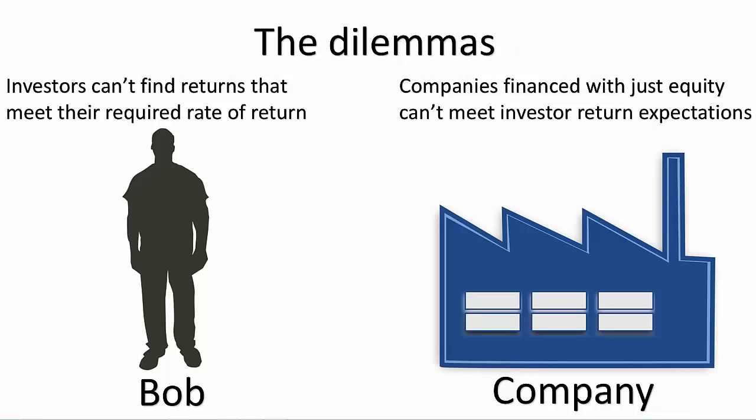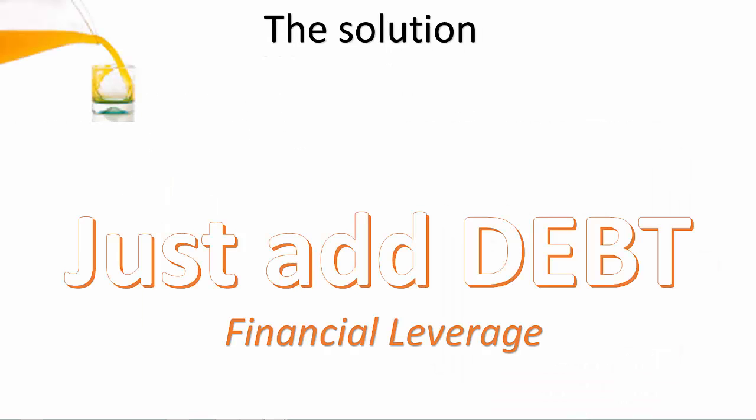The dilemma often confronting investors and companies alike is that the rates of return aren't high enough to meet expectations. The solution to this dilemma is to add debt. Isn't debt bad? Debt isn't bad in the finance world — debt is a tool of arbitrage. By replacing or supplementing more expensive equity with lower cost debt, you can increase the return generated on the equity investment. The reasoning comes back to the fact that equity is always more expensive than debt.